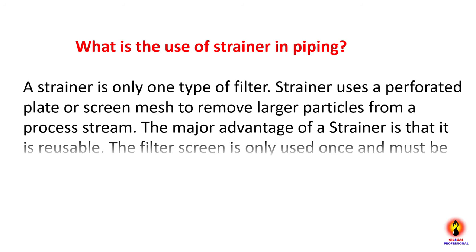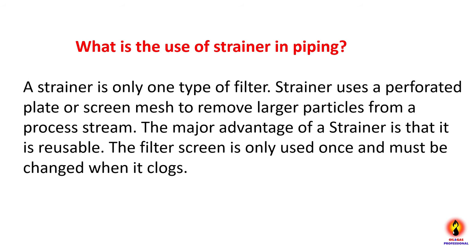What is the use of a strainer in piping? A strainer is one type of filter. A strainer uses a perforated plate or screen mesh to remove larger particles from your process stream. The major advantage of a strainer is that it is reusable, whereas a filter screen is only used once and must be changed when it is clogged.